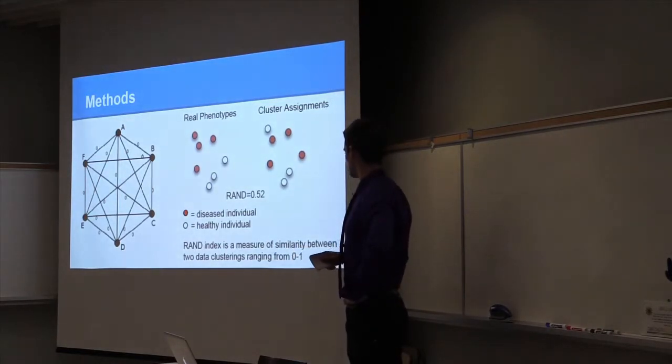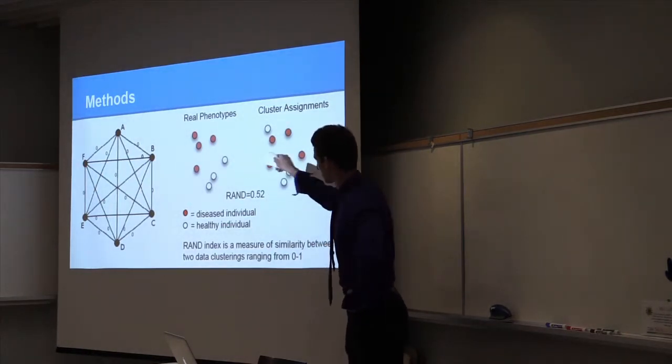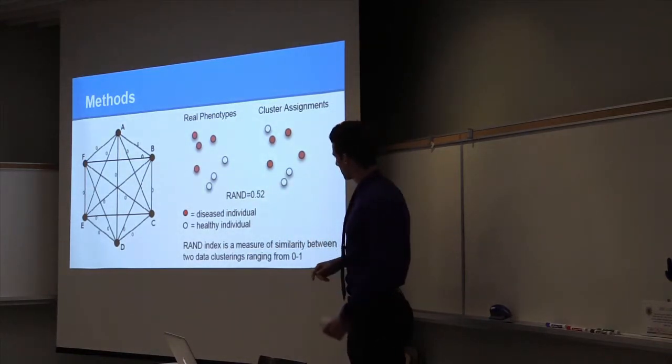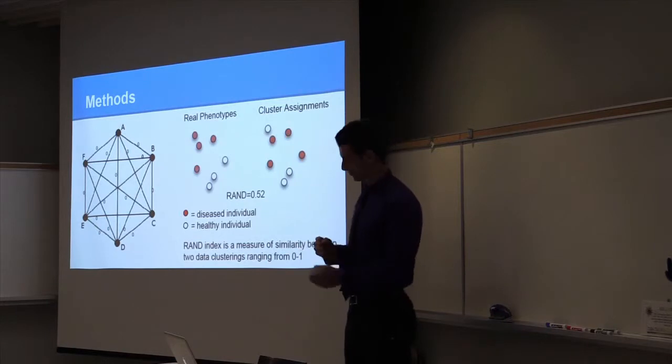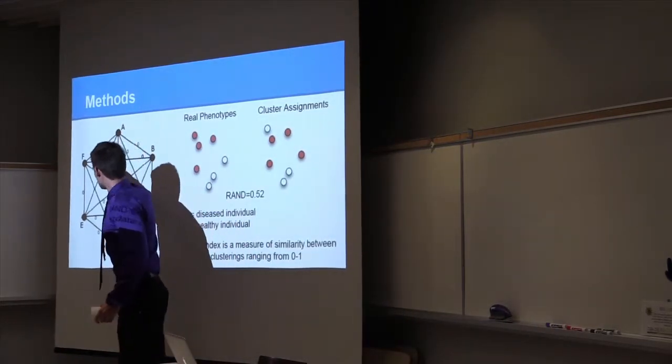So the Rand index is a measure of similarity between two data clusterings from 0 to 1. So if these two pictures were identical, then the Rand index would be 1, but in this case the Rand index is 0.52. So we would add, once it was the first sample, we would add 0.52 to this edge weight, this edge weight, and this edge weight.